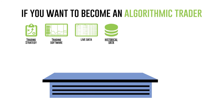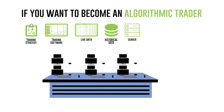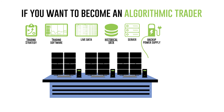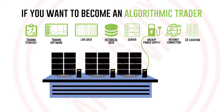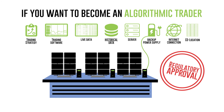You'll also need backend infrastructure: servers, computers, backup power supply, and internet connection. A co-location facility to have your servers installed at the location of the exchange minimizes trade execution time, which is required for HFT or high frequency trading. Regulatory approval is also required for many exchanges before you start your algorithmic trading.